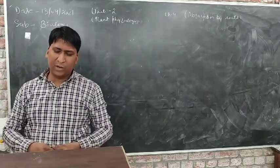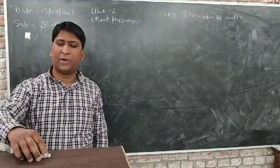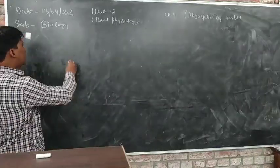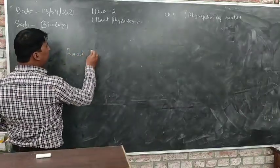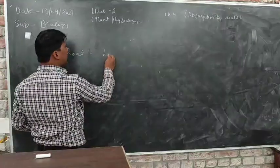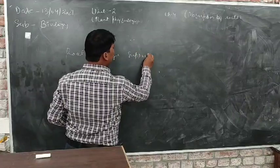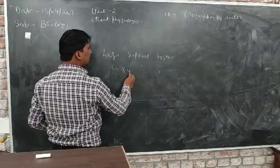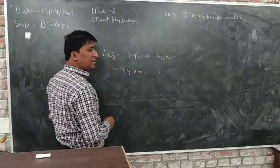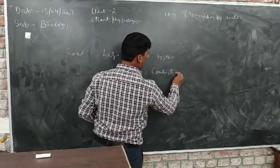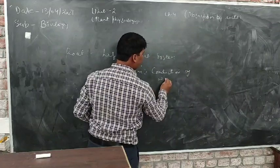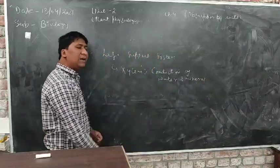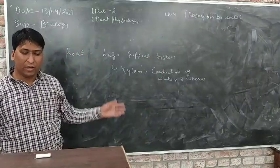When we talk about plant physiology, we are talking about the life functions of the plant, and the important part of this life function is the root. We can call root a life support system of the plant. Root is called a life support system because it has a specific tissue known as xylem, and xylem is required for the conduction of water and minerals.